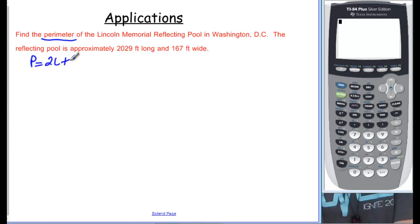That's the formula 2L plus 2W. L in our case is how long it is, and that's 2,029. And W in our case is how wide it is, so that's 167.